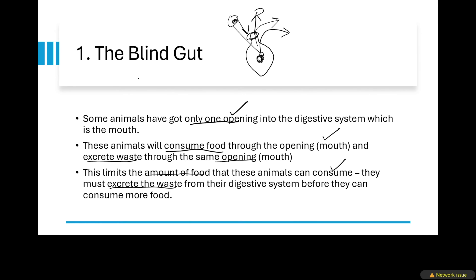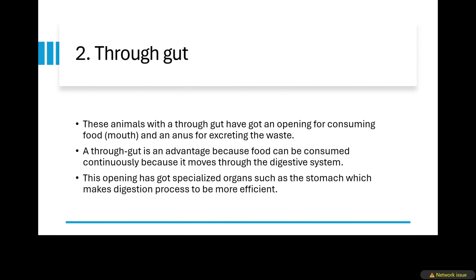So when you say we've got a blind gut, just remember that we've got only one opening, which is the mouth. And then the second type is called the through gut. So when you say animals have got a through gut, it means that they've got an opening for the consumption of food as well as an opening for the excretion of waste — just like humans.